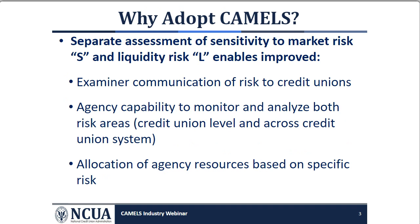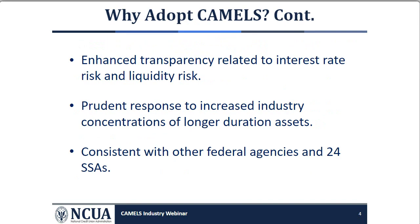Why did NCUA adopt CAMELS? The separate assessment of the S and L components enhances examiners' communication of interest rate risk and liquidity risk assessments to the credit union. At the agency level, this change improves NCUA's ability to monitor and analyze each separate area at the individual credit union level and across the credit union system, enabling better allocation of resources to focus on credit unions that are outliers or present increased risk to the share insurance fund.